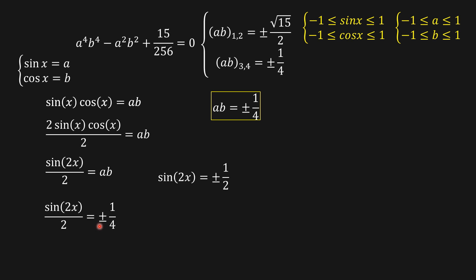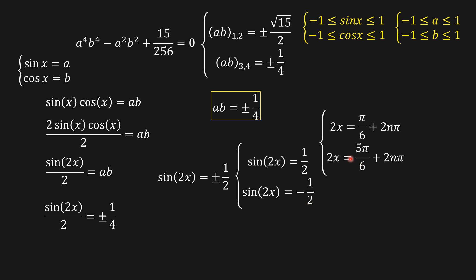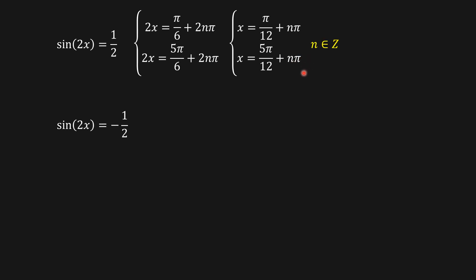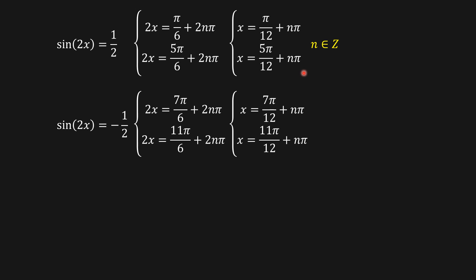Multiplying both sides by 2, sine of 2x equals plus or minus one half. For sine(2x) = 1/2, we get 2x = π/6 and 5π/6 plus 2nπ. For the negative case, we get the supplementary values. Dividing both sides by 2, x equals π/12 plus nπ and x equals 5π/12 plus nπ, where n belongs to the integers.